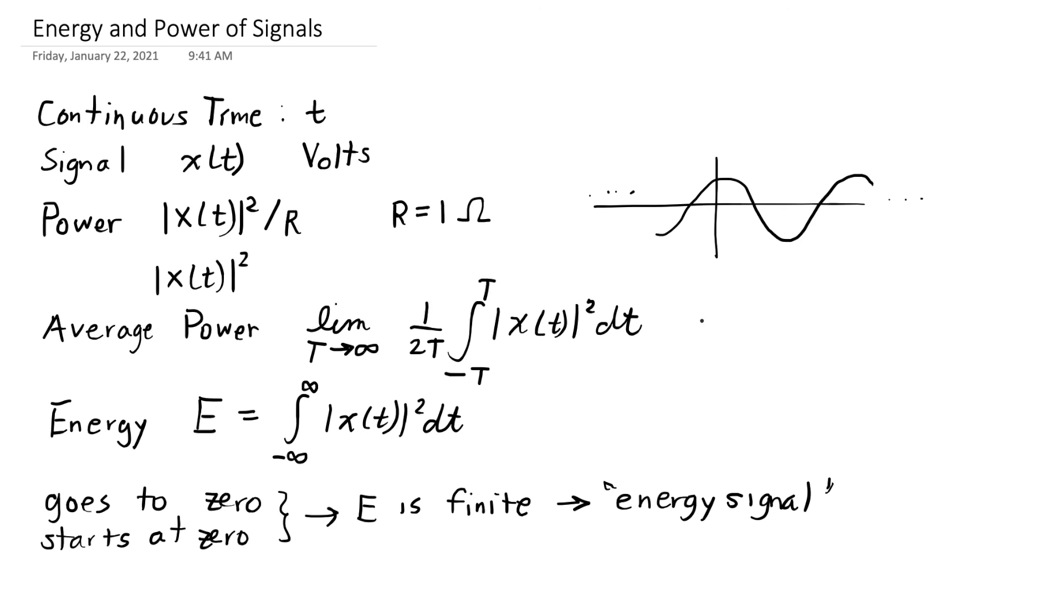So in that case, we can then talk about the average power, and when something has infinite energy and finite average power, we're going to call this a power signal.